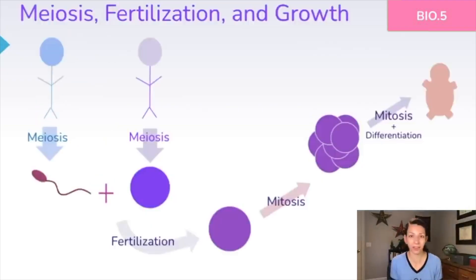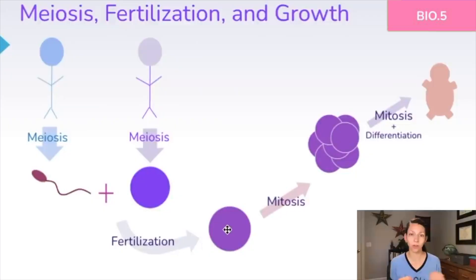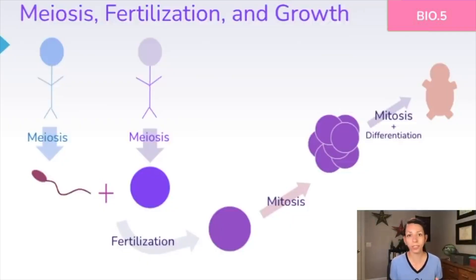In humans, both a biological male and a biological female will need to undergo meiosis in order to produce eggs and sperm. Then one egg cell and one sperm cell will combine in fertilization. After that, the fertilized egg will divide and make copies of itself through mitosis as the embryo starts to grow. Mitosis will continue until the cells start to differentiate and become all the different important parts of the growing embryo.